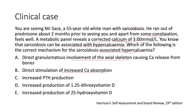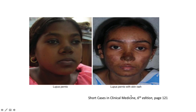Is it C: increased parathyroid hormone production, D: increased production of 1,25-dihydroxycholecalciferol (vitamin D), or is it E: increased production of 25-hydroxyvitamin D? Here are some beautiful pictures courtesy of Short Cases in Clinical Medicine.